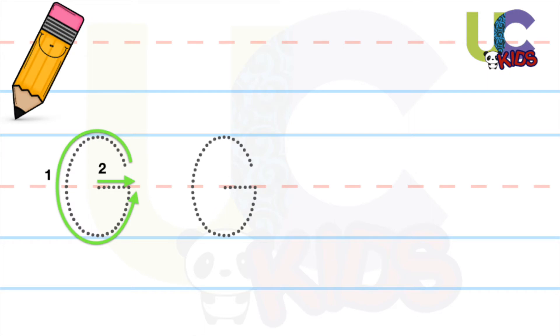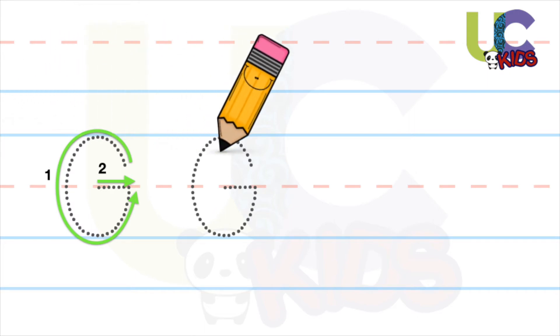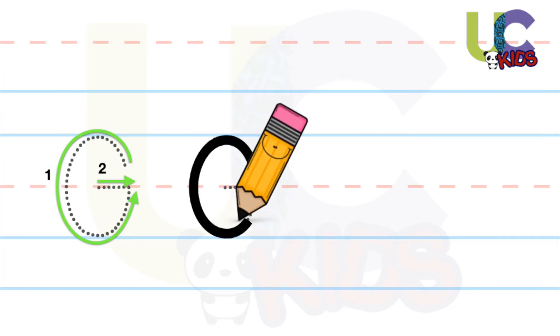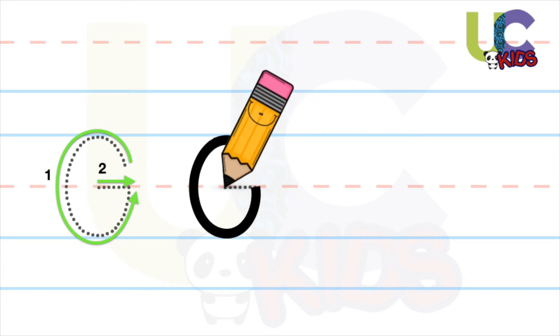Now get your pencil and start writing. We'll start at the top and draw a curved line all the way round to the middle. And at the end, draw a sleeping line to connect.